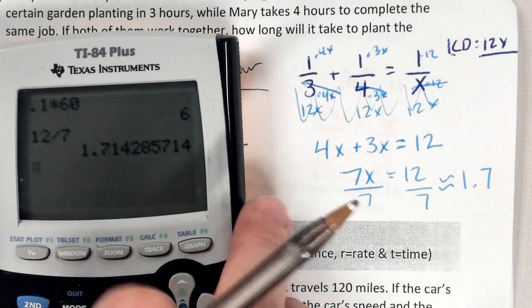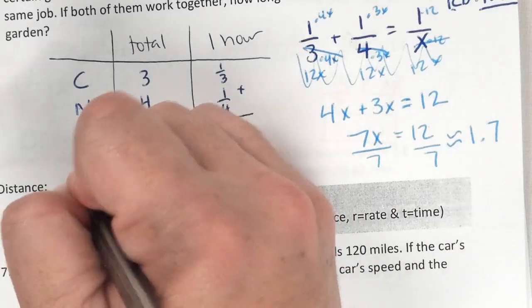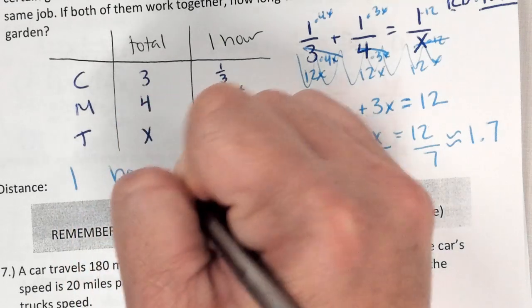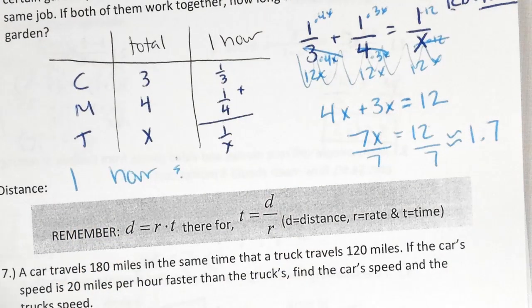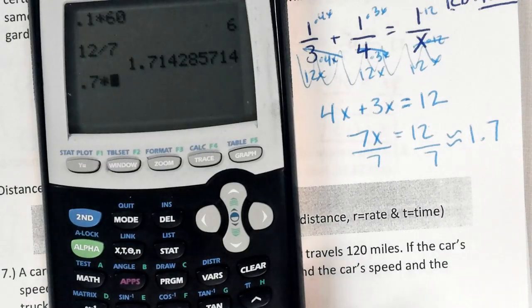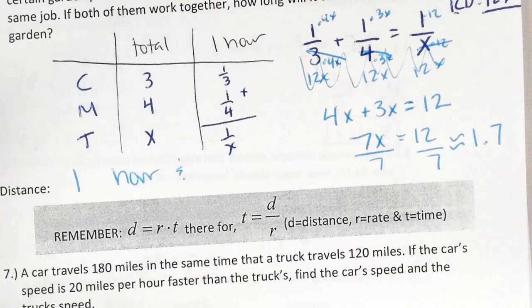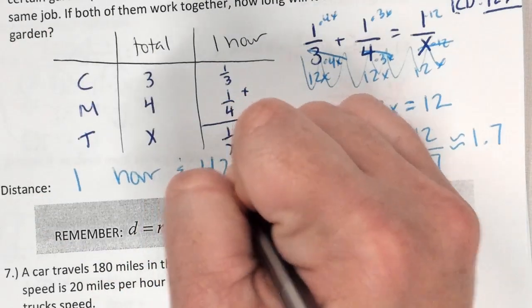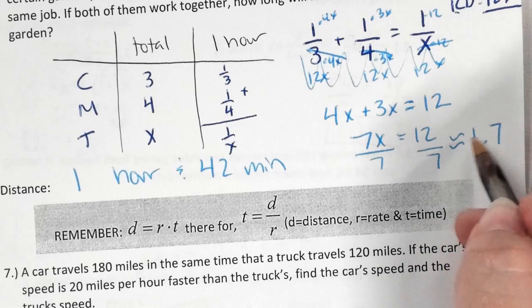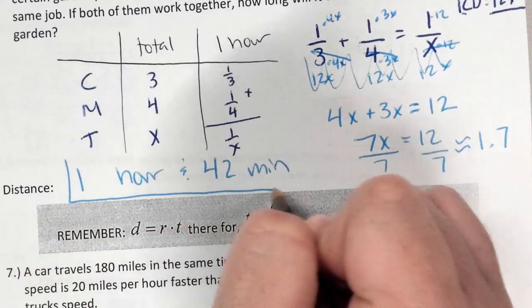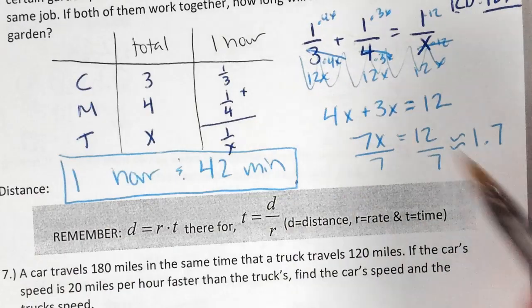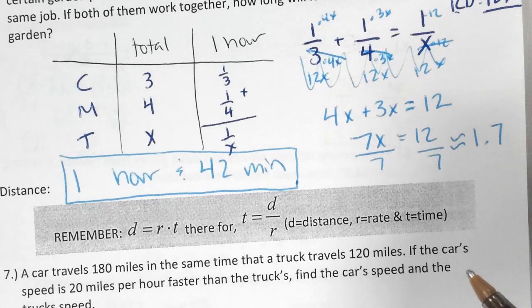Are you really going to memorize all those decimal places? No. So we have one hour. How do I find my minutes? 0.7 times 60. And 42 minutes. What does that wiggly equal sign mean? Approximate. It's because I rounded.